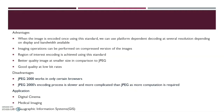Advantages: when the image is encoded once using this standard, we can use platform-dependent decoding at several resolutions, dependent on the hardware and bandwidth available. Imaging operations can be performed on compressed versions of the images such as cut and crop. Region of interest encoding is achieved using this standard. It provides better quality images at smaller size in comparison to JPEG, with good quality at low bitrates. Disadvantages: JPEG 2000 works only in certain browsers, and its encoding process is slower and more complicated than JPEG as more computation is required. Applications include digital cinema, medical imaging, and geographical information systems such as GPS.